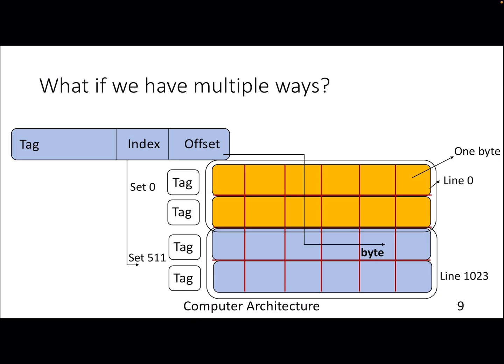We also have something called set-way associative caches, which is a bit different from direct map. Here we provide multiple ways for a given index. Remember in the direct mapped cache there is a one-to-one mapping between index bits and line number. Now we are saying let's group multiple lines together and call them a set — a cache set, a set of lines.